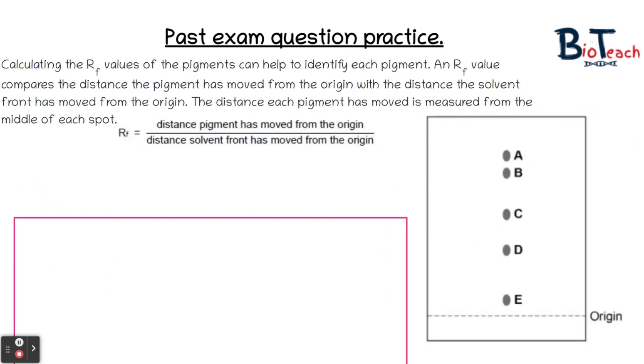This next diagram is showing you about the RF value, so it says calculating the RF values of the pigments can help to identify each pigment. An RF value compares the distance the pigment has moved from the origin with the distance the solvent has moved from the origin. The distance each pigment has moved is measured from the middle of each spot. So it gives you the RF calculation at that point.